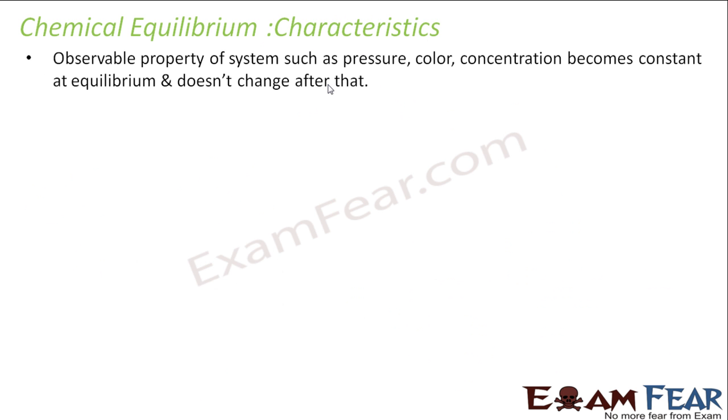Now we'll discuss some characteristics of the chemical equilibrium. Observable properties of the system such as pressure, color, concentration become constant at equilibrium and don't change after that. These are the observable properties. Equilibrium is dynamic in nature.